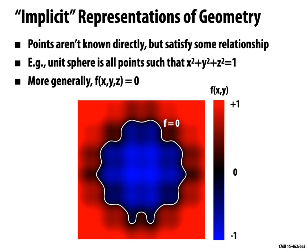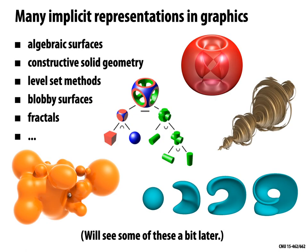On the bottom here, I've plotted some interesting function — negative in part of the plane, positive in other parts, and exactly where it's 0 is where the shape lives. How do we describe such functions f? There are lots of different ways to express a function, and for that reason there are many different implicit representations used in computer graphics: algebraic surfaces, constructive solid geometry, level set methods, blobby surfaces, fractals. We'll see a bunch of these later. But before getting into any particular representation, let's play a couple of games that help us understand the pros and cons.